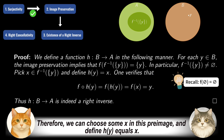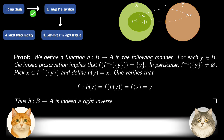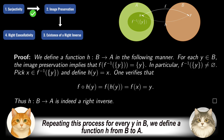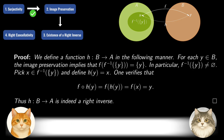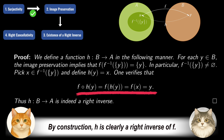It follows that the preimage of the singleton {y} is non-empty. Therefore, we can choose some x in this preimage and define h(y) = x. Repeating this process for every y in B, we define a function h from B to A. By construction, h is clearly a right inverse of f.